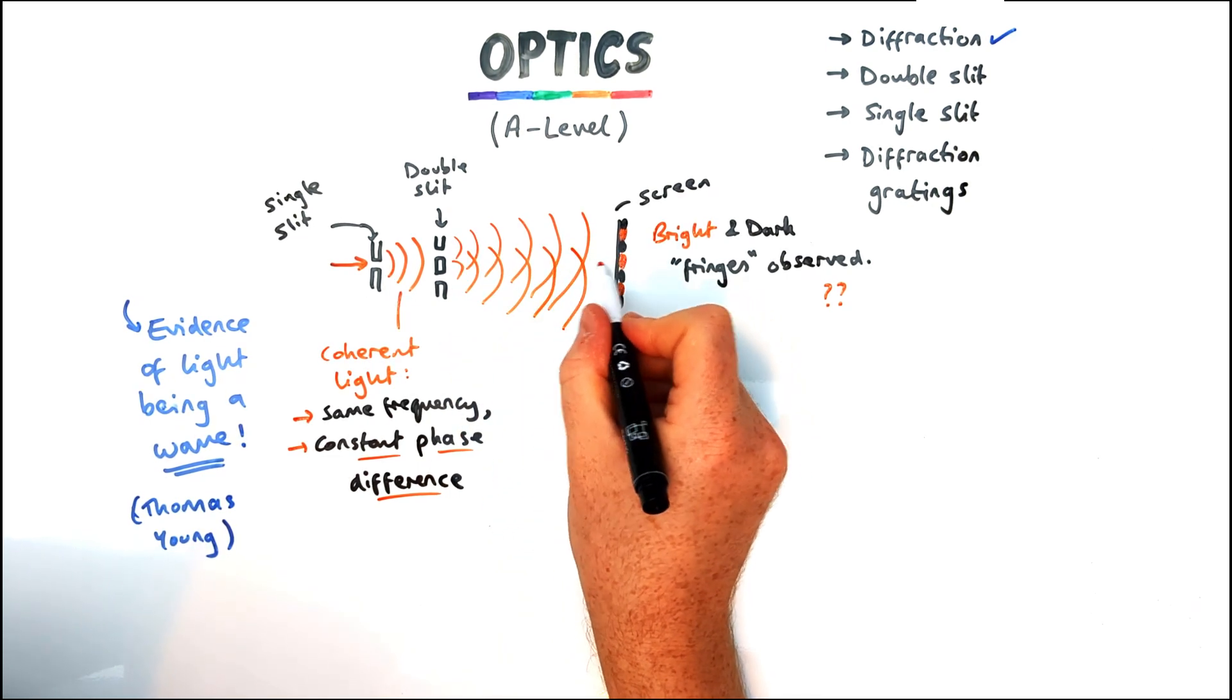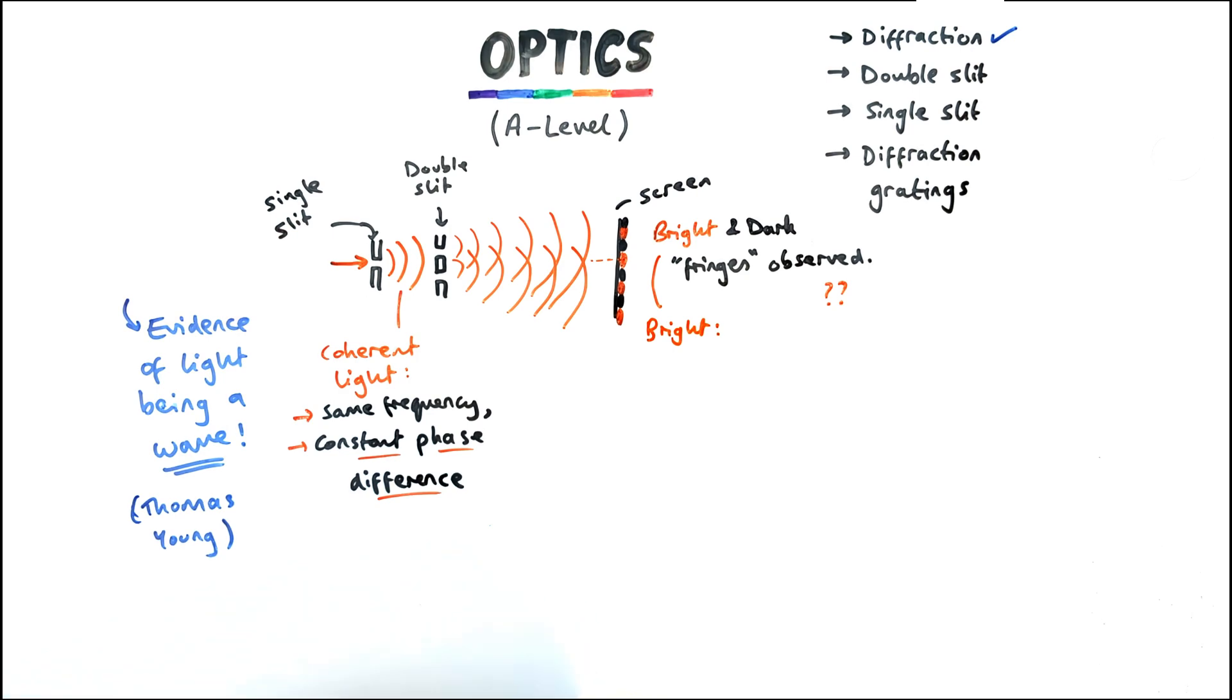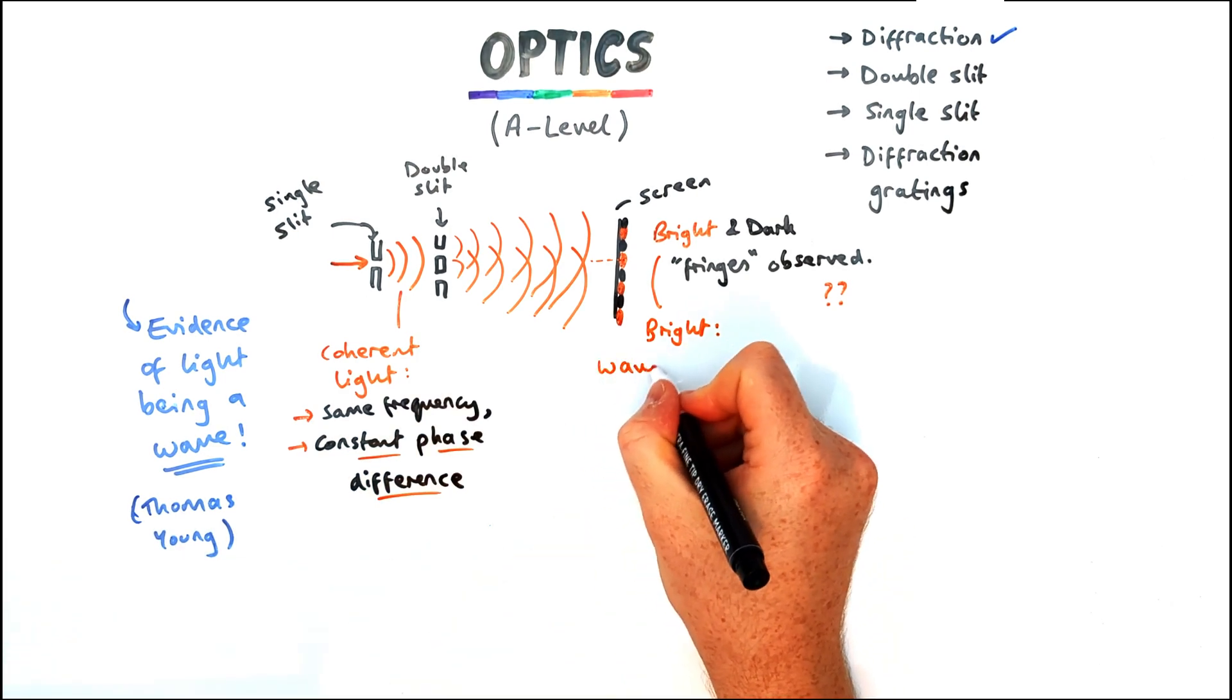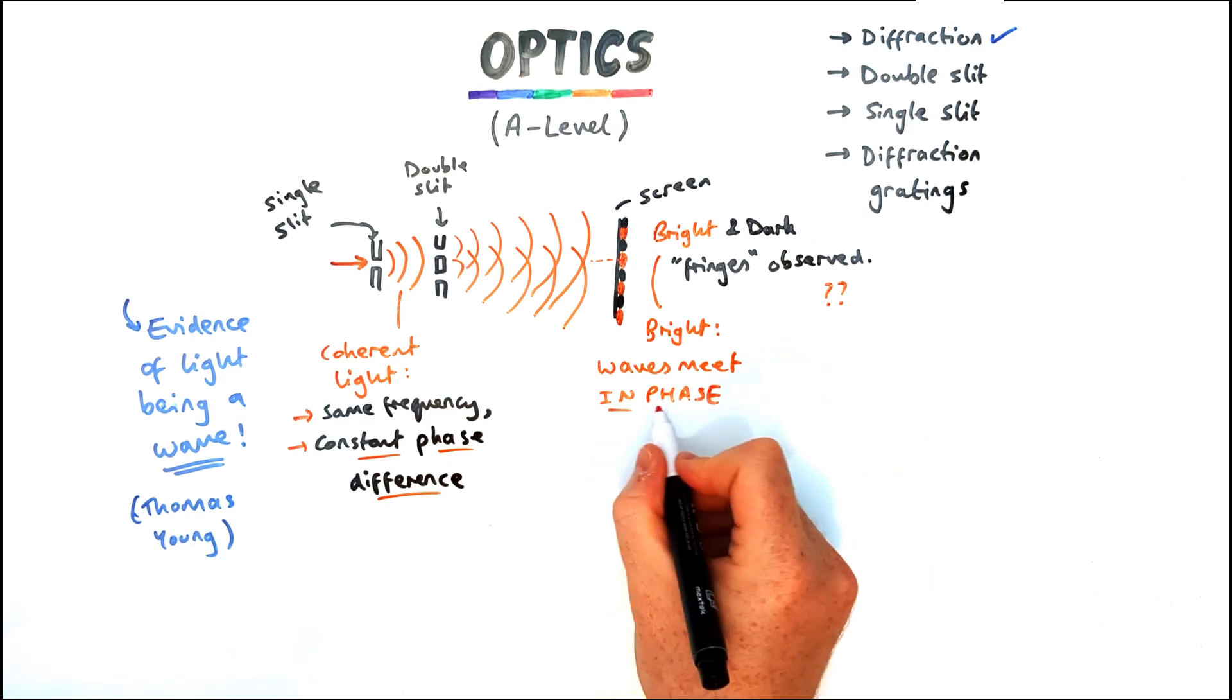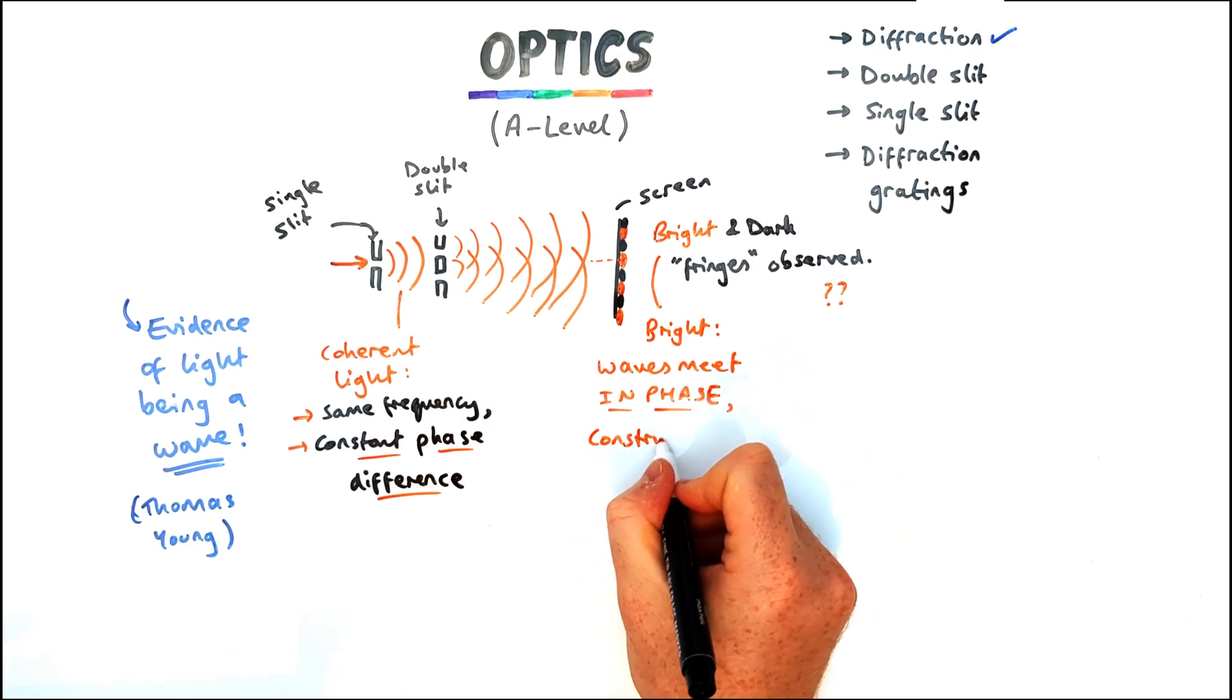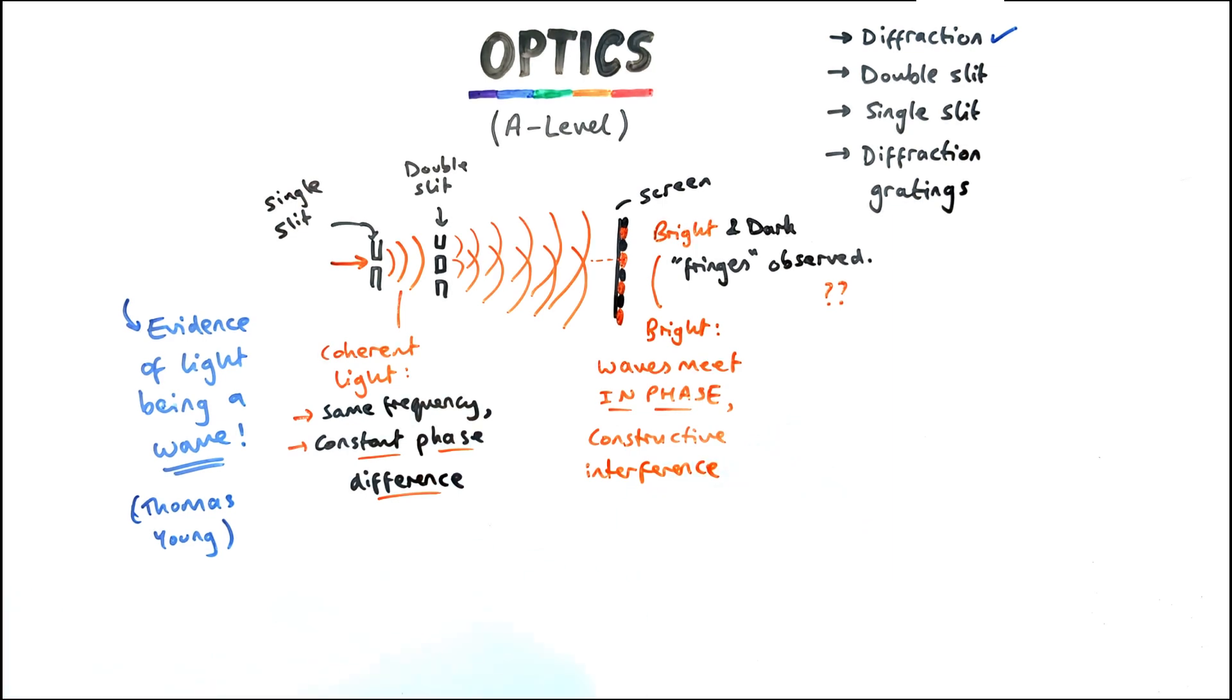When you have the bright fringes that means the waves meet in phase with each other. So a peak meets up with a peak which is also known as constructive interference. This means the amplitude is doubled effectively meaning the fringe is bright.